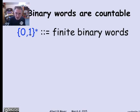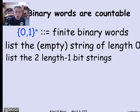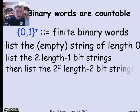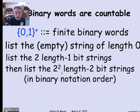How are they countable? I need a way to list them in some orderly way. Let's do it by length. Begin by listing the empty word — the string of length 0. Then list all the one-bit strings, the strings of length 1. There are two of those: 0, then 1. Then list all the length-2 strings — there are four of them — in some sensible order, say by their binary representation.